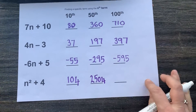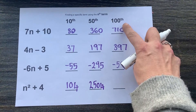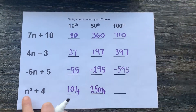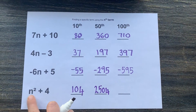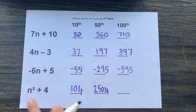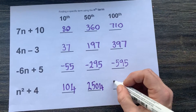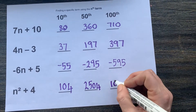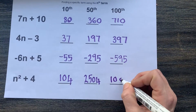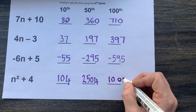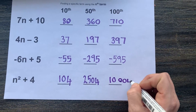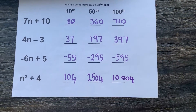And for the final one, we would have 100. 100 squared is 10,000, plus the 4 would give us 10,004.